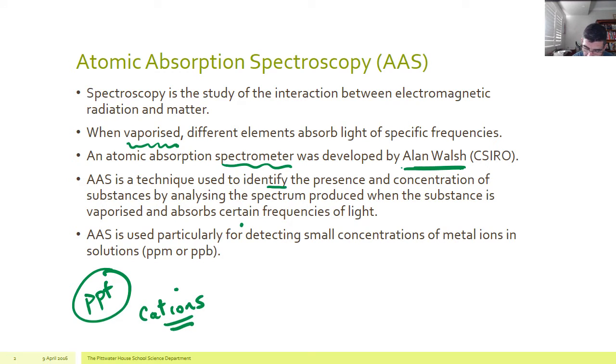So we want to try and identify the presence of certain substances, and also, and more importantly, their concentration, simply by analysing the spectra of light that's being absorbed by the vaporised form of different solutions. And the thing that's great about this technique is we can get concentrations down to the parts per million, or even parts per billion.